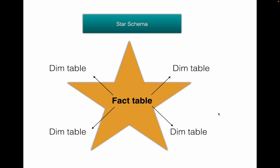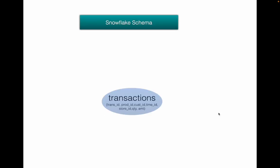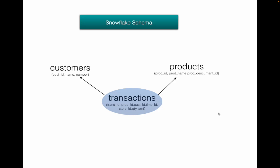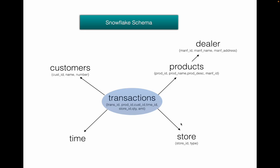Snowflake schema also has a center fact table — the same transactions table — and then the product table, customer table, time table, and store table. But here the product table gets normalized into another table where we separate out the dealers' information, creating a sub-dimension table.